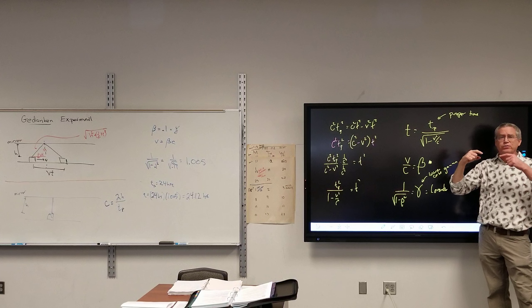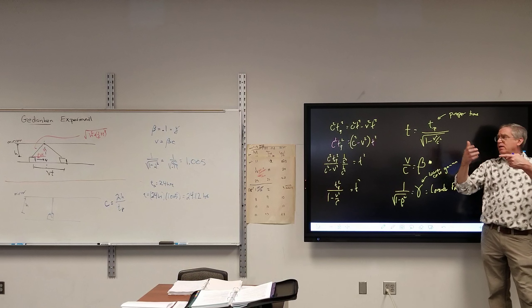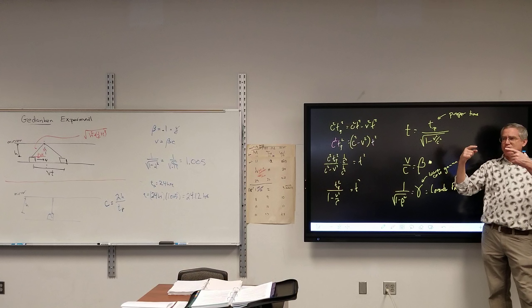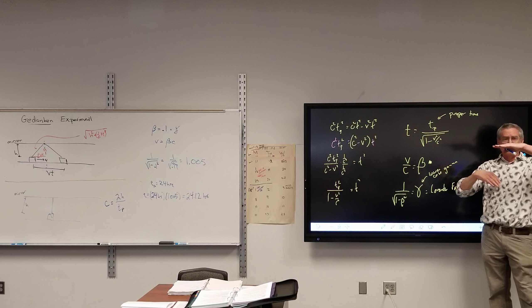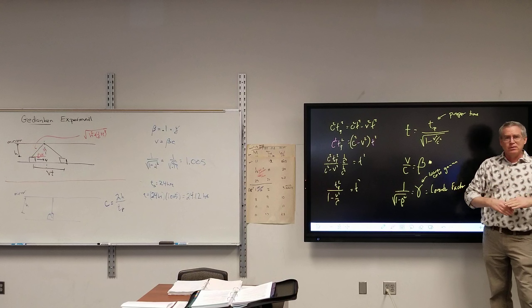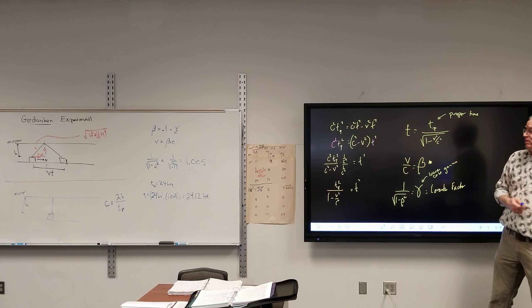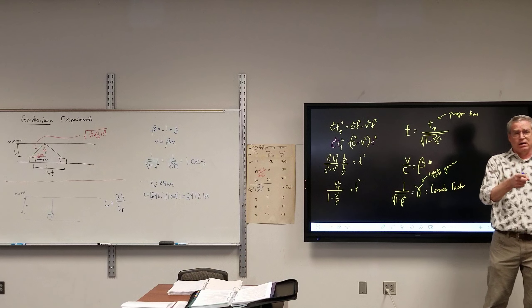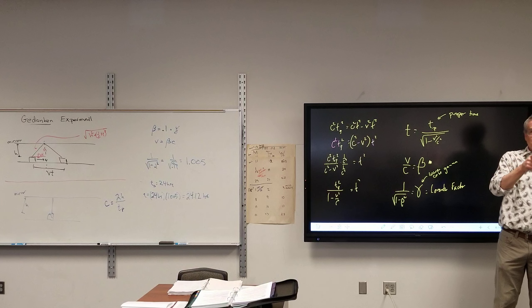So, tachyons are particles that are traveling faster than the speed of light. All the math says is that it can't go less than. It's a barrier. If you start out less than, you can't get above it. If you start out above it, you can't go below it. But by our current definitions of time, if I shot you with a tachyon gun, you would be hit by the tachyon before I pulled the trigger.